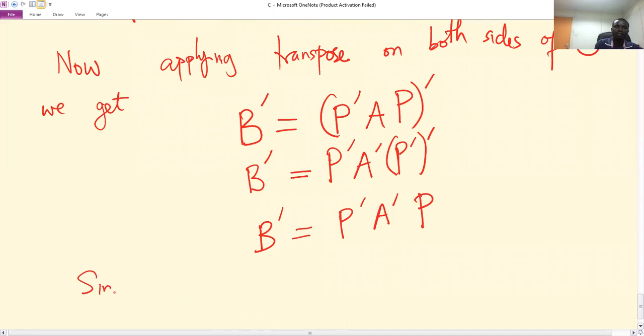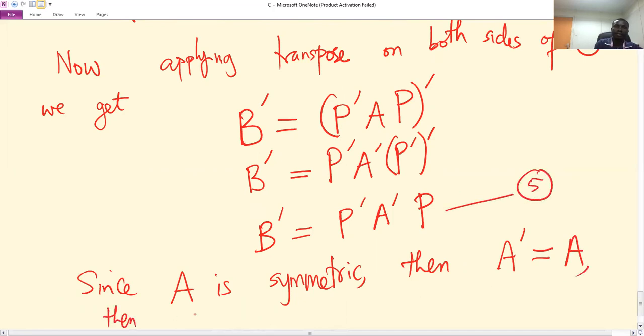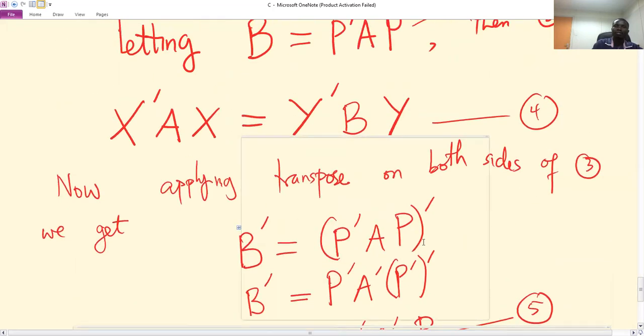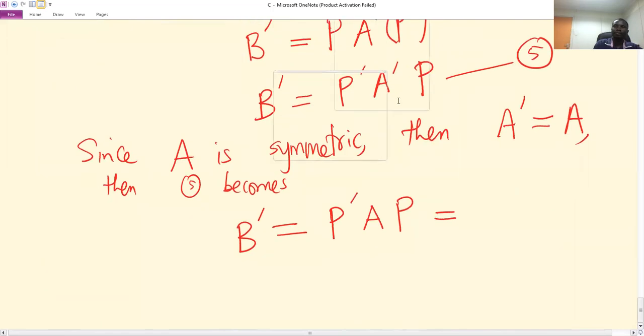Since A is symmetric, A' = A. Then equation 5 becomes B' = P'AP, which equals B from equation 3.